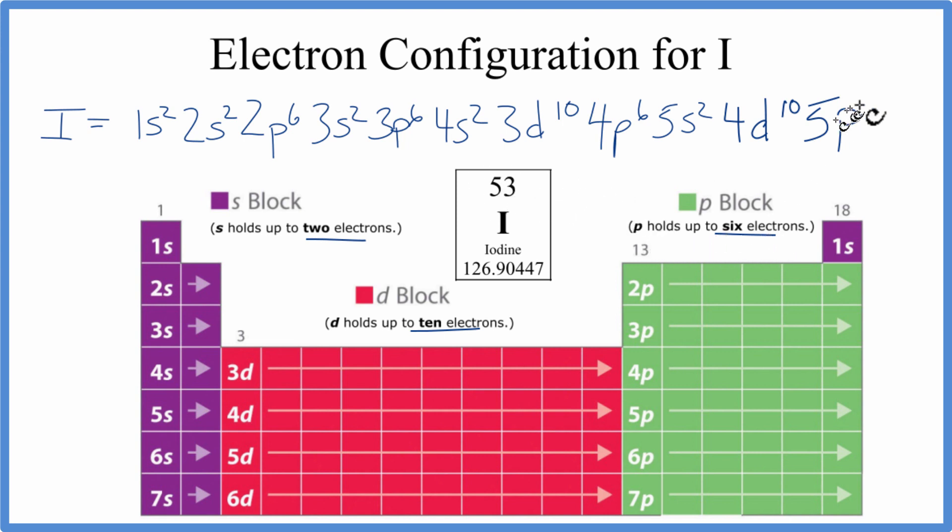So it holds up to 6, but we don't have to put 6 in. We'll put 5 in there. And this is the electron configuration for iodine. All these numbers add up to 53. That's the number of protons and the number of electrons for iodine.